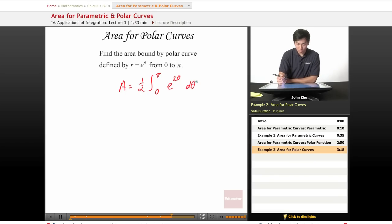So e to the 2 theta d theta simply equals one-half times e to the 2 theta evaluated from 0 to pi.